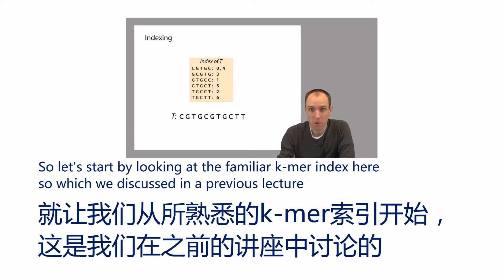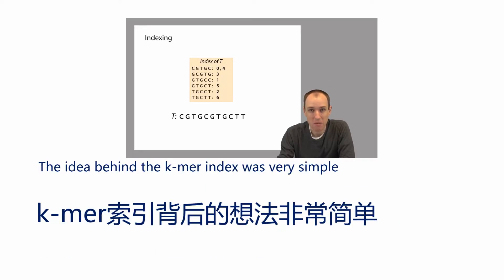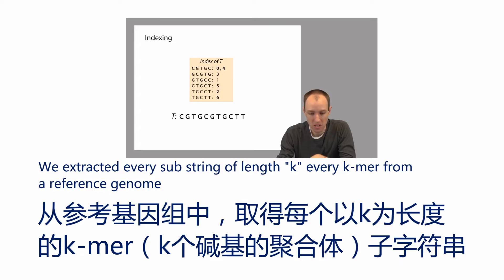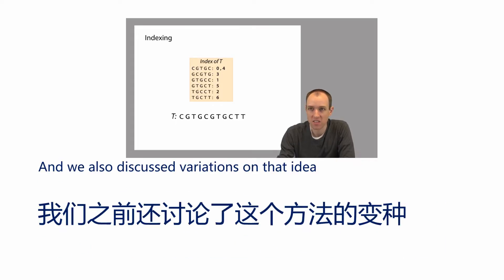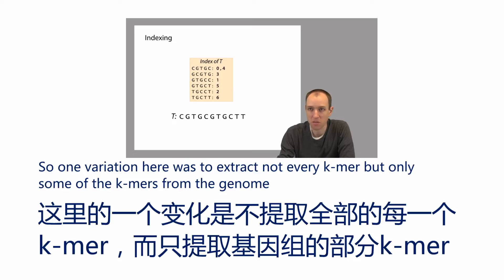Let's start by looking at the familiar K-mer index, which we discussed in a previous lecture. The idea behind the K-mer index was very simple: we extracted every substring of length K — every K-mer — from a reference genome. I'll say genome here instead of text T, since the genome is what we're indexing. We also discussed variations on that idea, including extracting not every K-mer, but only some of the K-mers from the genome.